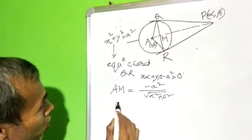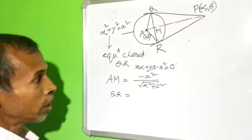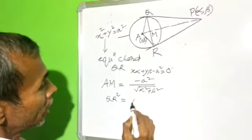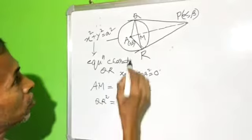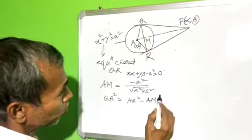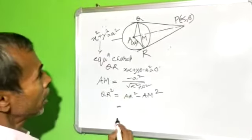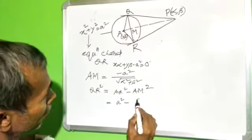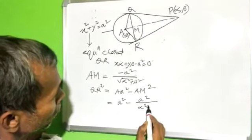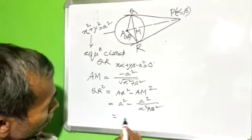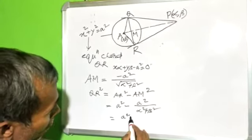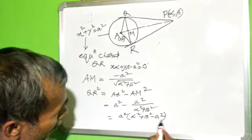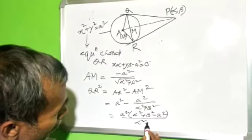Now, QR by Pythagoras: QR square equals AQ square minus AM square. Since AQ is the radius, this gives a square minus AM square. Therefore, QR square equals a square minus a square squared over alpha square plus beta square. Taking common: alpha square plus beta square minus a square, divided by alpha square plus beta square.